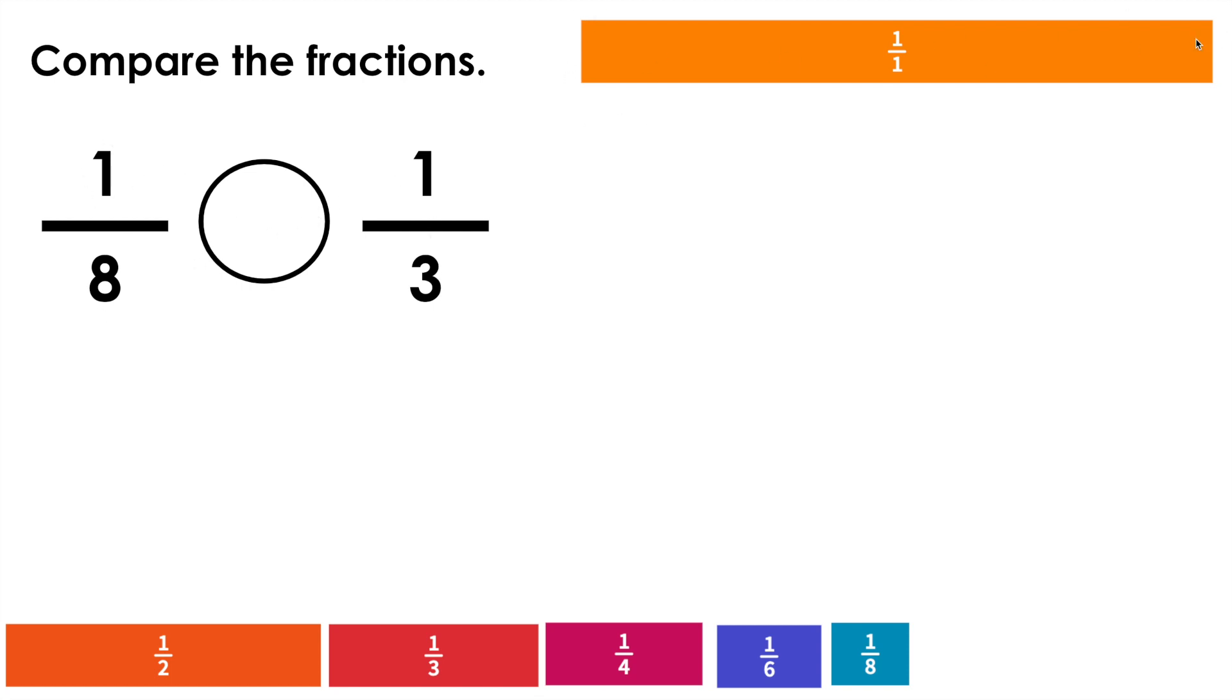We have one whole for reference. We notice that 1 third is greater than 1 eighth. If this whole is split into eight equal parts, those parts will be smaller than if this whole was split into three equal parts. Those thirds would be greater.